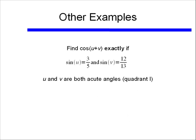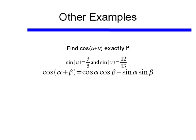One final type of problem you can be given is: find cosine of u plus v, exactly, if we know sine u is 3 over 5, and sine of v is 12 over 13. And we're given that both u and v are acute angles — that is they are in quadrant 1.